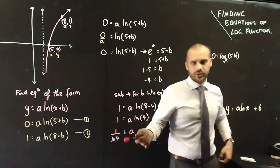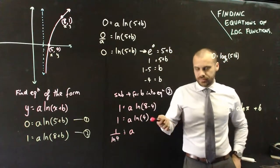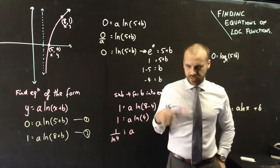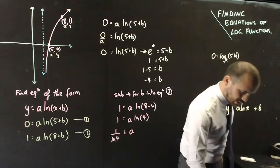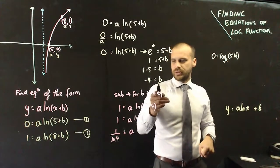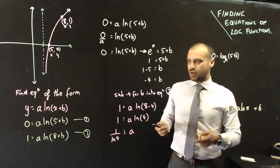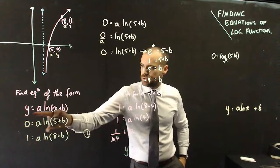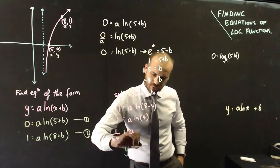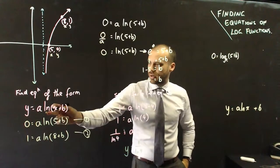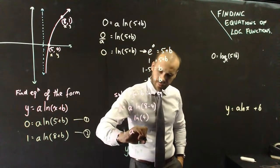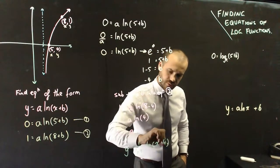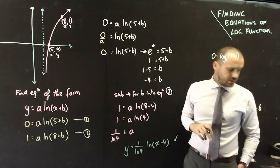Now you could type 1 over ln(4) into your calculator, but it's just going to be some weird decimal. But we can just keep it like that. If this was a non-calculator test, we're actually kind of finished now. Because we've got an a value and we've got a b value. And so we can give our final answer for the equation. We can say that y is equal to a, which is 1 over ln(4), ln(x) minus 4. And that is my answer to that question.